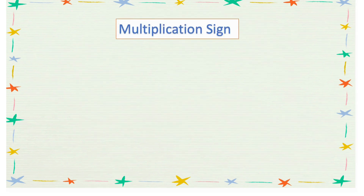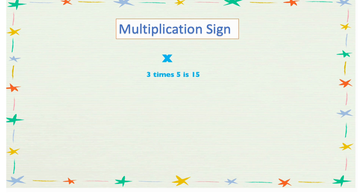To solve multiplication problems we need to know the multiplication sign. In mathematics we use × as a multiplication sign. So 3 times 5 can be written as 3 × 5 = 15, and it can also be written vertically.